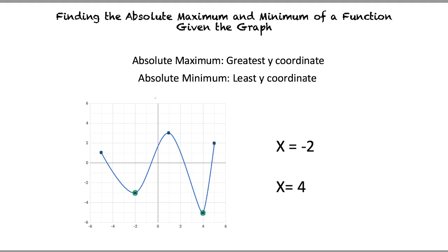At x equals negative 2, y equals negative 3, and at x equals 4, y equals negative 5. Negative 5 is the lowest y-value, so therefore x equals 4 is the absolute minimum of the function.